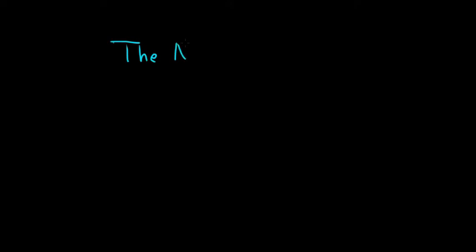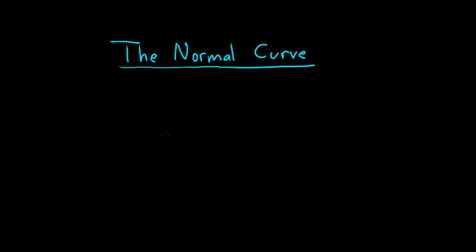Let's talk about something called the normal curve. The normal curve is bell-shaped. This here is the x-axis. It's actually a function that you can put in your calculator and you graph it, and when you graph it, it ends up looking something like this.